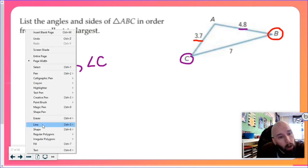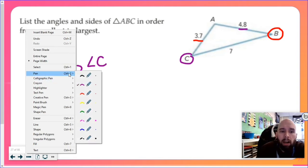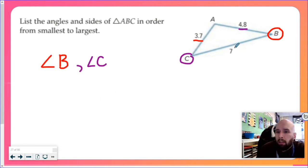And that only leaves me with one. My largest side happens to be 7, which means the angle opposite of that is A. So my largest angle is angle A. Don't know how this is going to show up on YouTube, but BCA.